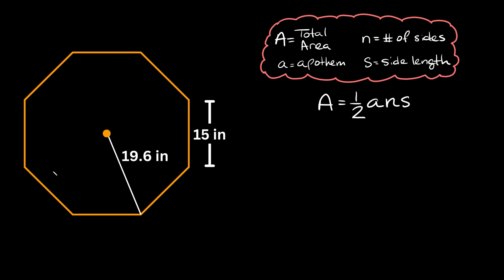We have a regular polygon with eight sides, so it's just an octagon. We're given two dimensions: the length from the center of the polygon to one of the vertices as 19.6 inches, and we're also given the length of one of the sides as 15 inches.